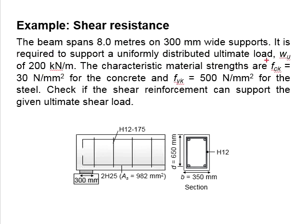The concrete strength is 30 N per mm² and the steel bar grade is 500 N per mm². The question asks us to check if the shear reinforcement provided can be used to support the ultimate shear load.